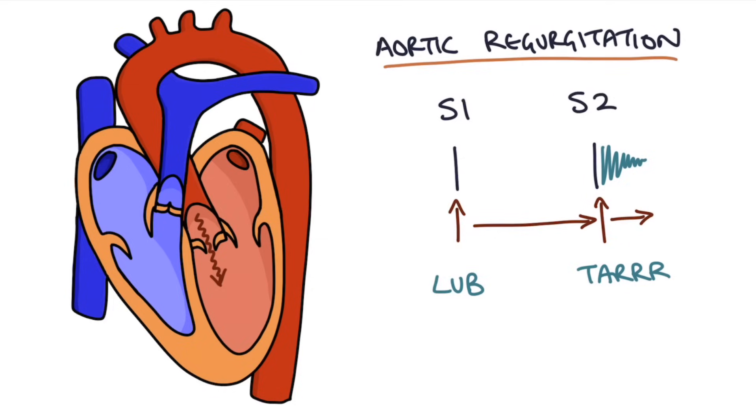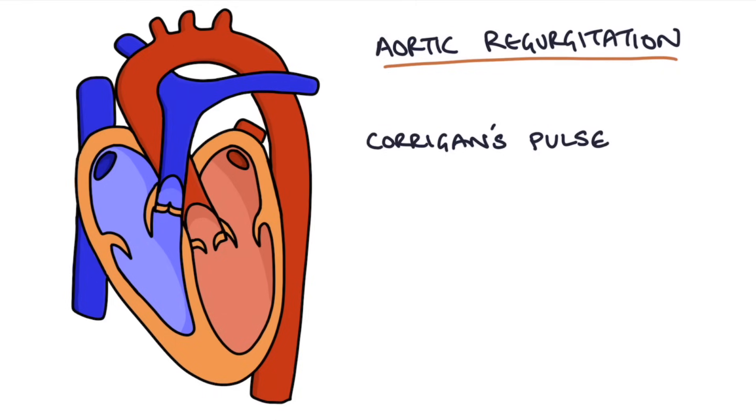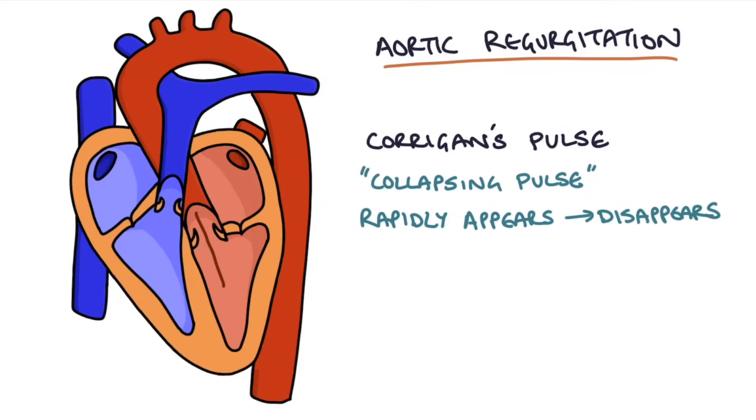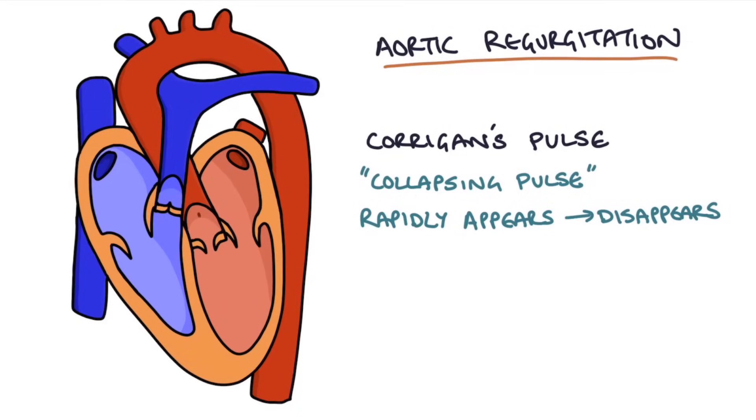Aortic regurgitation is associated with something called Corrigan's pulse, and a Corrigan's pulse, which is also called a collapsing pulse, is when it rapidly appears and then disappears as the blood is pumped out of the ventricles and then immediately starts flowing back through the aortic valve into the ventricles. Aortic regurgitation often results in heart failure, and this is due to the back pressure of blood waiting to get through the left-hand side of the heart.